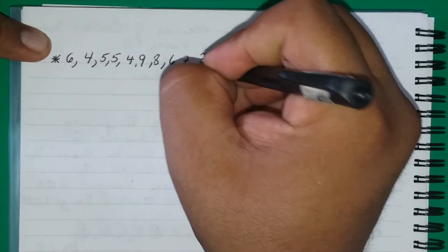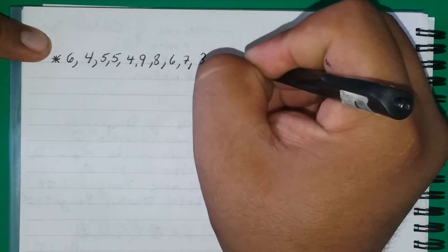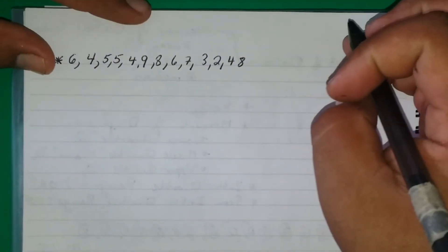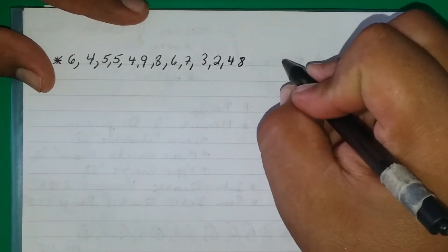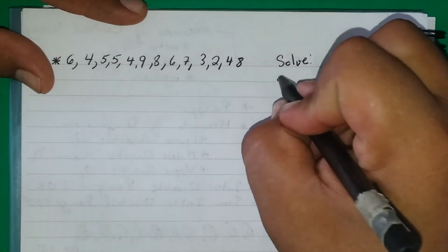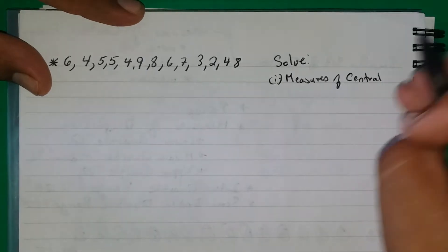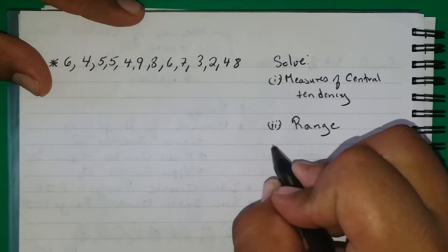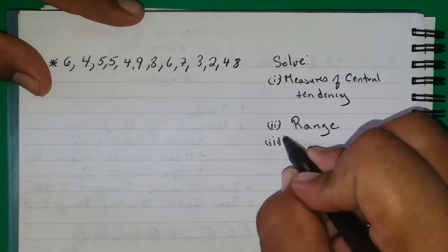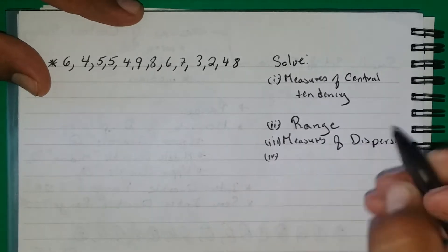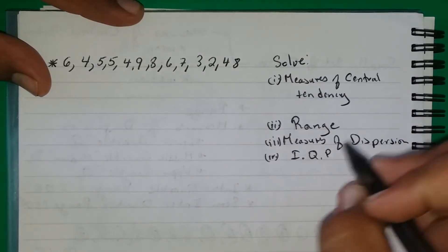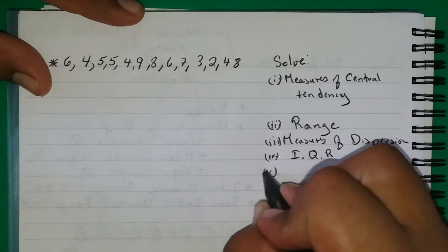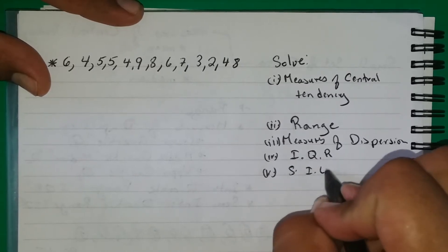The person got: 6, 4, 5, 5, 3, 2, 4, and 8. What we want to do with this is solve for: one — measures of central tendency; two — the range; three — measures of dispersion; and four — the IQR, which is the interquartile range; and lastly the semi-interquartile range.